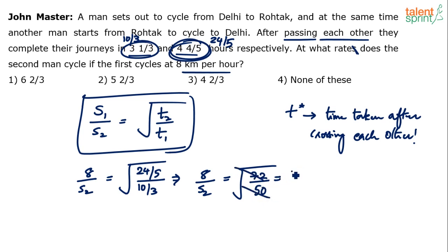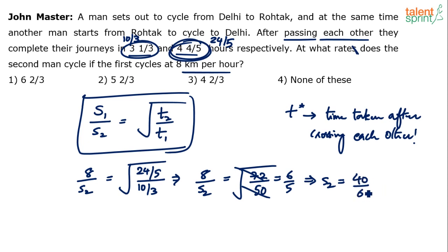So, 8 divided by S2 equals 6/5. Therefore, S2 equals 8 times 5 divided by 6, which is 40/6, equal to 20/3, which is 6⅔ kilometers per hour.